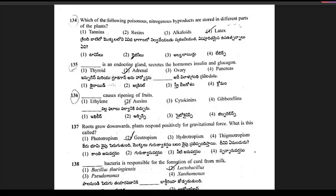Question 134: which of the following poisonous nitrogenous byproducts are stored in different parts of plants? The answer is nothing but alkaloids. Option 3 is the right answer.